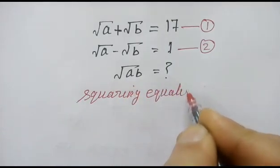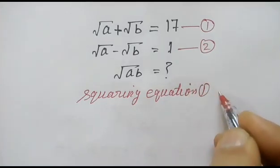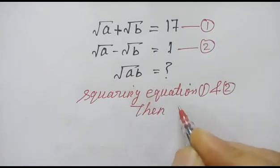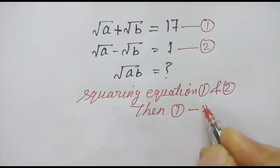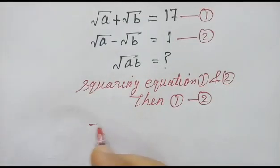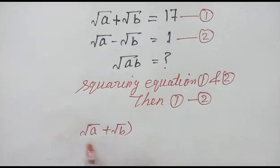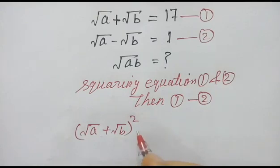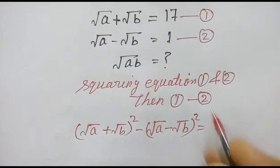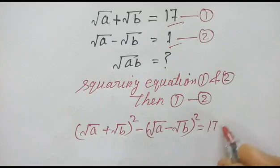So how to solve this problem? First, squaring equation one and equation two, then doing equation one minus equation two. So we compute: (√a + √b)² minus (√a − √b)² equals 17² minus 1².